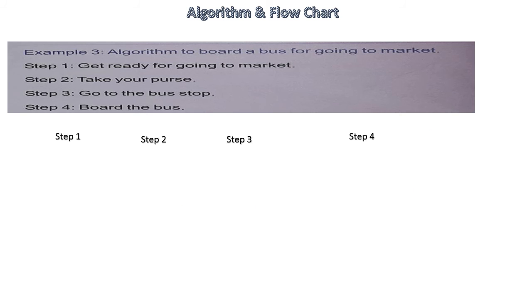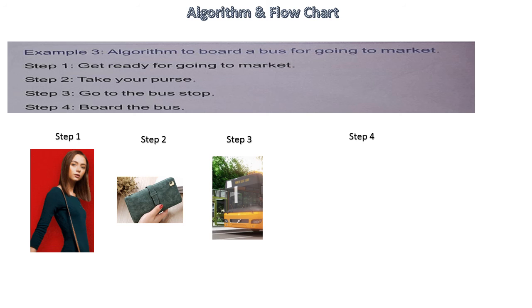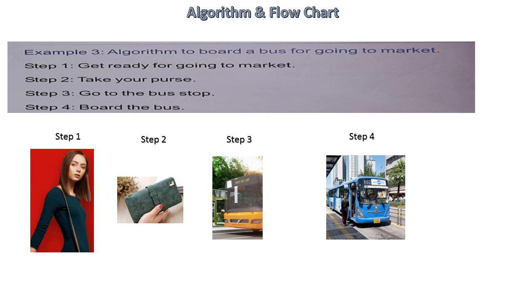Example three, algorithm to board a bus for going to market. Step one, get ready for going to market. Step two, take your purse. Step three, go to the bus stop. Step four, board the bus. Okay, understood?